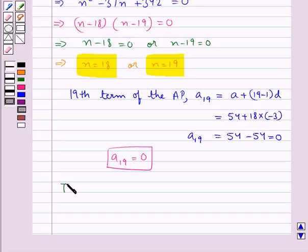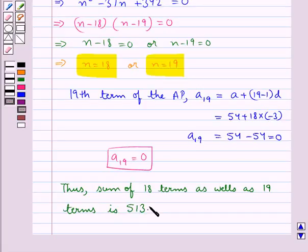Thus we say the sum of 18 terms as well as 19 terms is 513. So with this we complete the session. Hope you have understood the solution of this question.